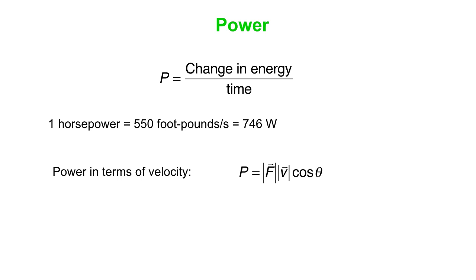Power is also a scalar quantity. It is the magnitude of the force multiplied by the magnitude of the velocity multiplied by the cosine of the angle between those two vectors, the force and the velocity. If the force and velocity happen to be parallel, then you simply get F times V.